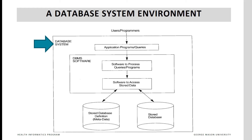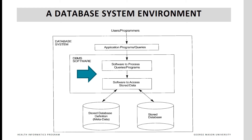Users or programmers use the database system to manipulate the data. The database system is a collection of data and systems. The application or query is a programming code that instructs the software to manipulate the data. The software processes the programming instructions, accesses the data, and manipulates it. When it is done, it stores the result of the query back in the database. A database is usually shown as a cylinder to emphasize its role in storing data.